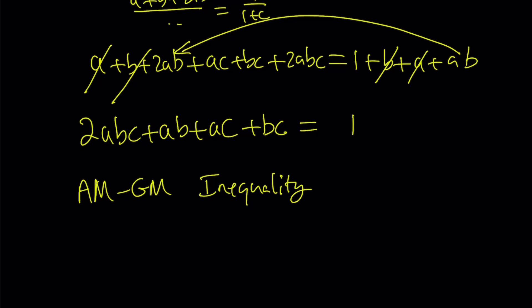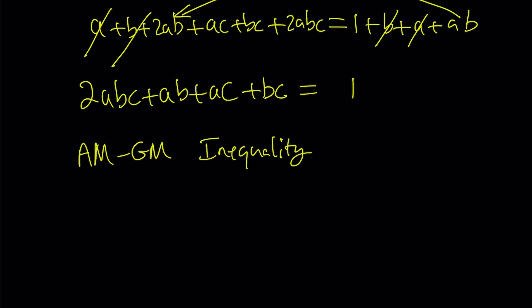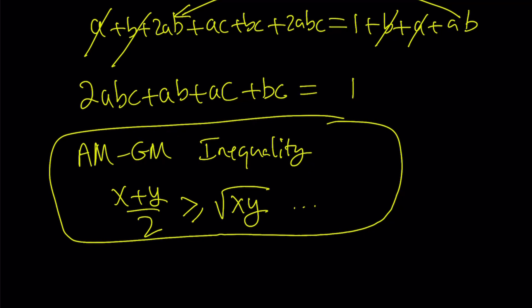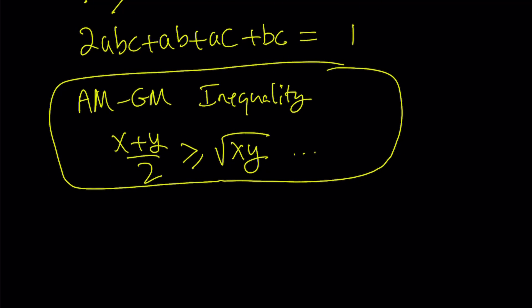So AM-GM inequality basically says that the arithmetic mean of a bunch of positive numbers is always greater than or equal to their geometric mean. As long as the numbers are positive, it doesn't matter how many numbers you're dealing with. For example, you could be dealing with two numbers like x and y. Their arithmetic mean, which is the average, is going to be greater than their geometric mean, which is the product or the square root of their product. With three numbers, it's the cube root. With four numbers, it's going to be the fourth root. So that's how the AM-GM inequality works. And the proof is fairly easy. With the cases of 2 and 3, we can use basic algebra. And then for higher cases, we can use induction.